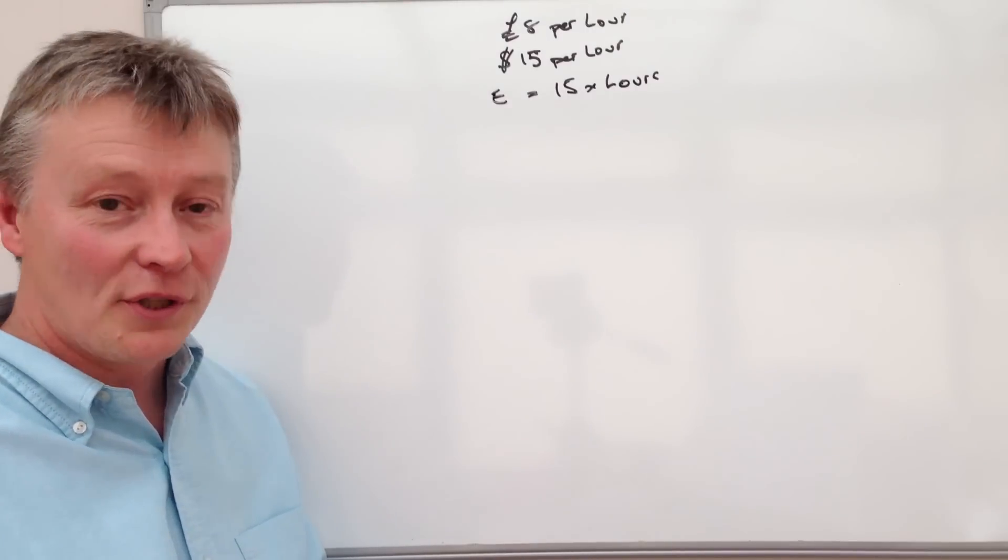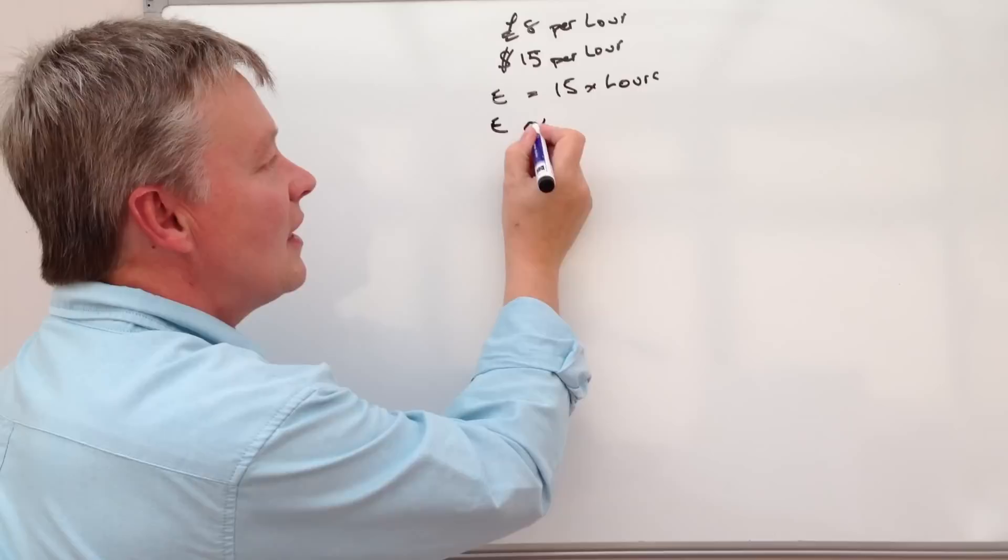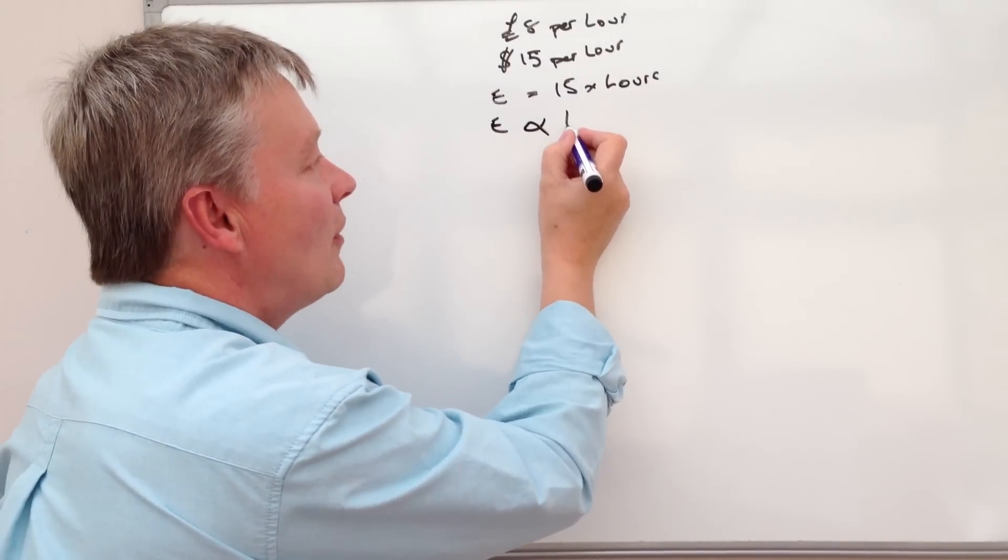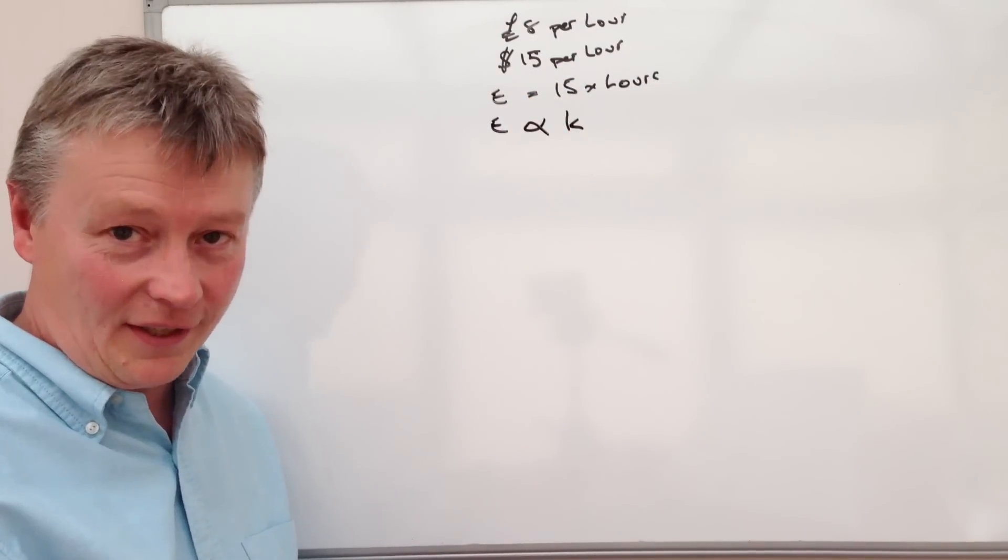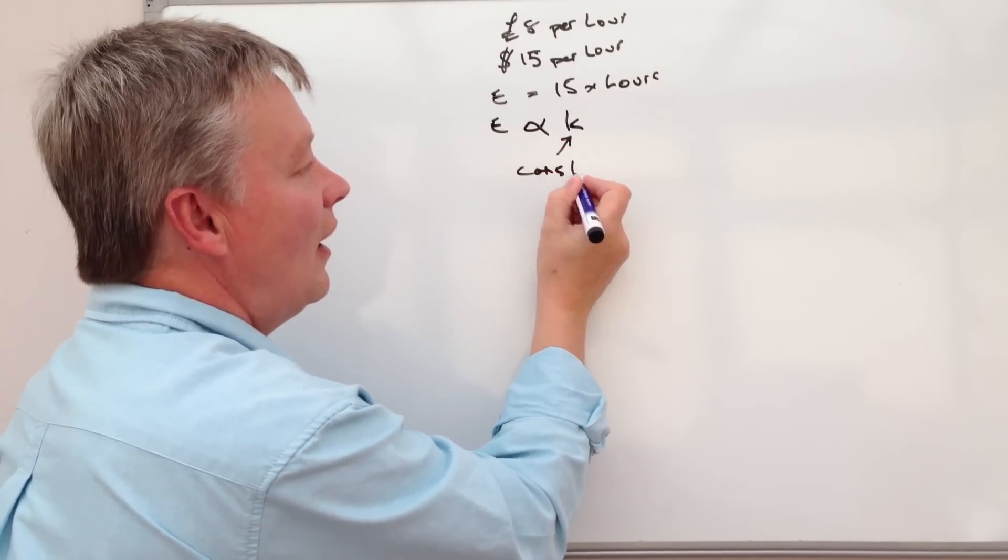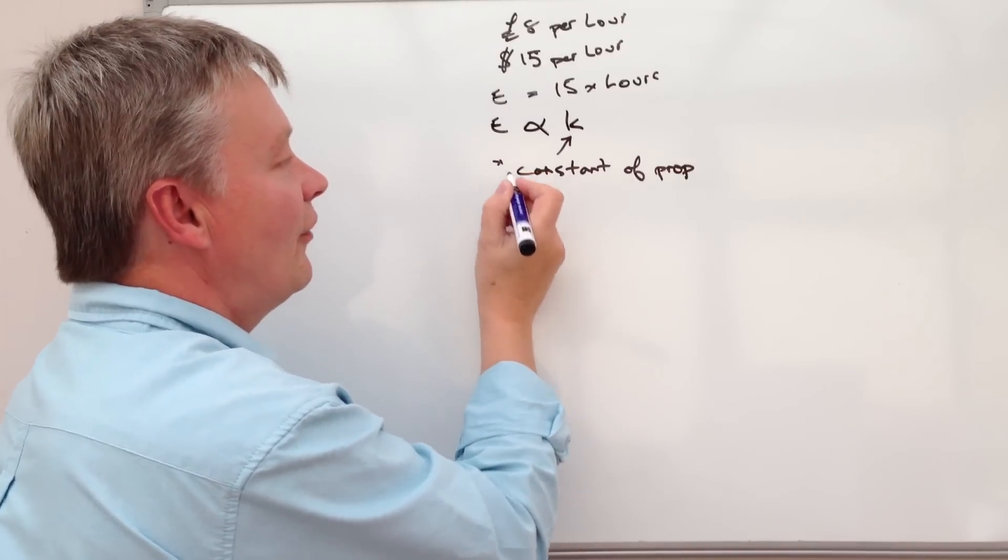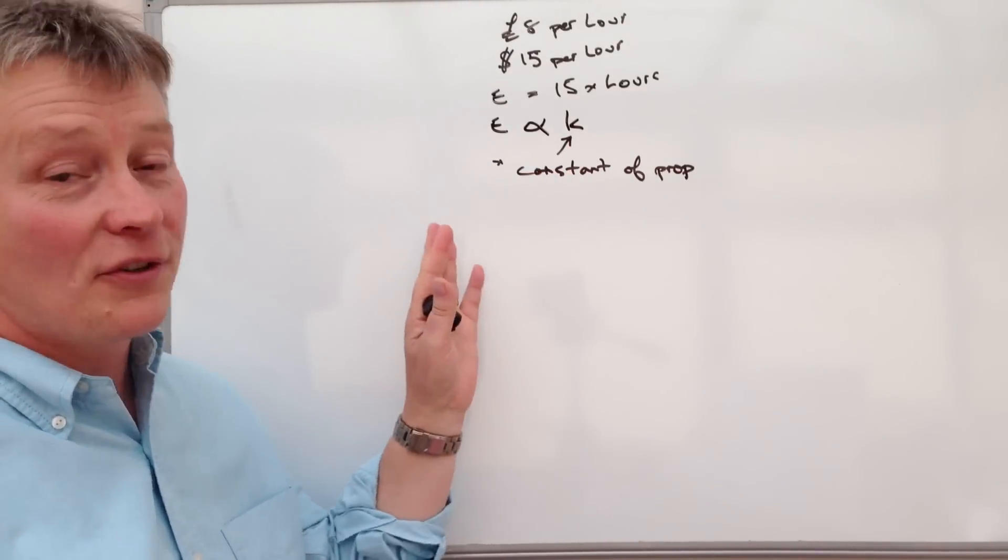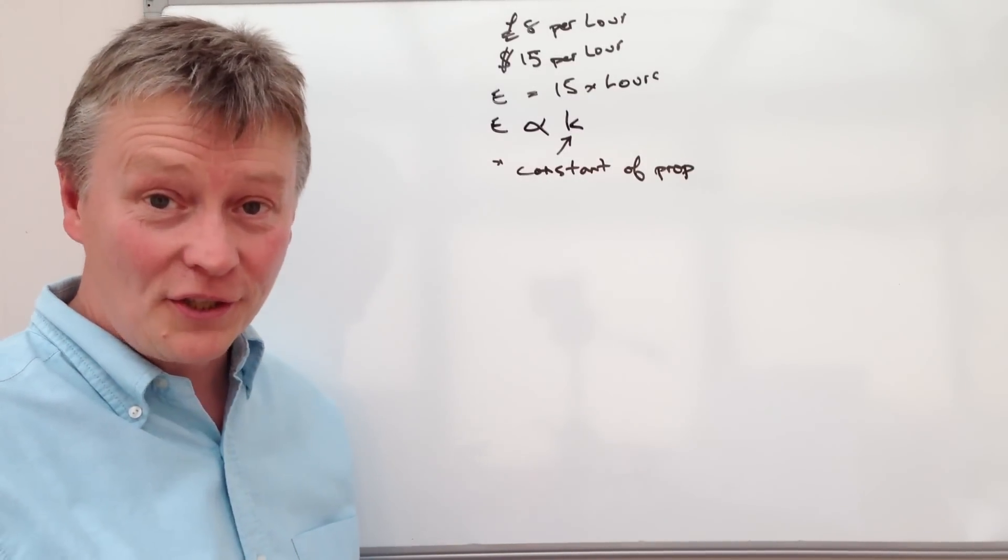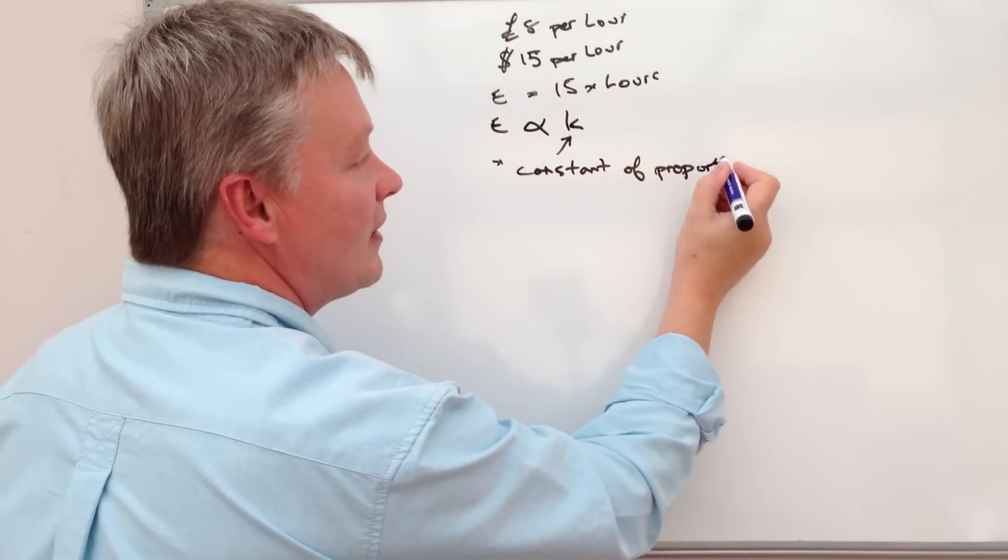So the way direct proportionality works is that we write it as something like E is directly proportional to K, which is this 15 bit. This K means the constant of proportionality. I think that the reason they've used K as opposed to C is because it differentiates it a little bit from other equations that use C. But K is the constant of proportionality.